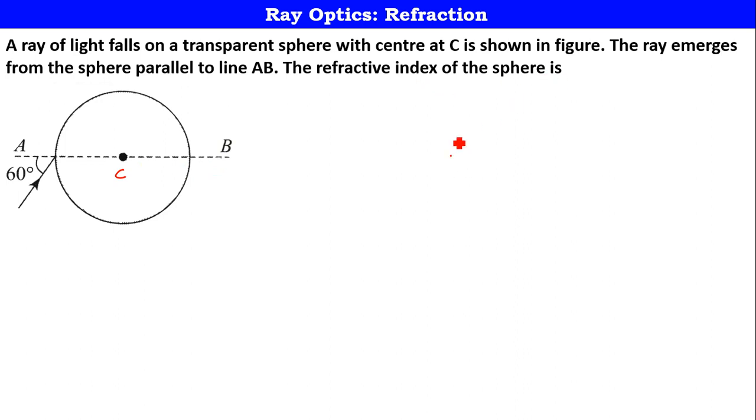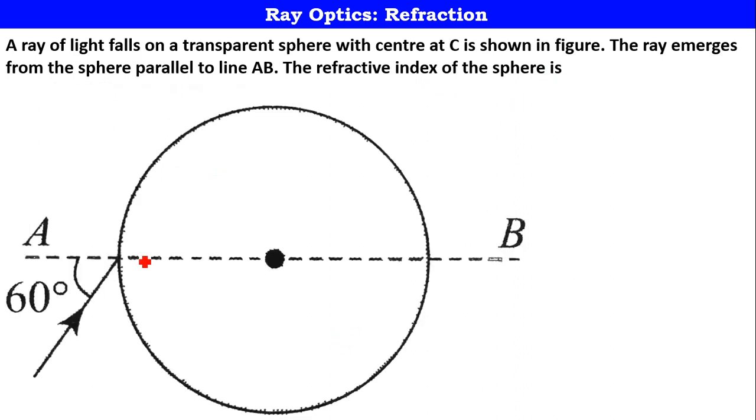Let us take a bigger sphere so that we can clearly understand things. Since nothing is given about medium refractive index, let me consider that as air, whose refractive index is actually 1. Now, the ray is entering from rarer to denser medium. Generally, if you compare any medium with air, that will be mostly denser only. Whenever the ray goes from rarer to denser, it should bend towards normal. If the ray is entering from denser to rarer, it will bend away from normal.